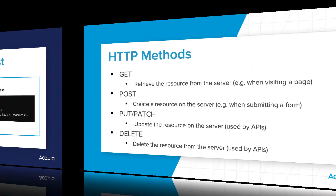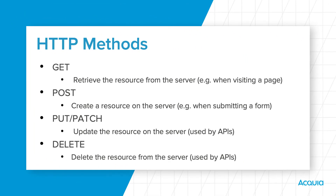The HTTP method defines what the client wants to do with the requested resource. In practice, HTTP methods are also known as verbs. These define common ways that the client can act upon the resource. By far the most common HTTP methods are GET, POST, PUT, PATCH, and DELETE.